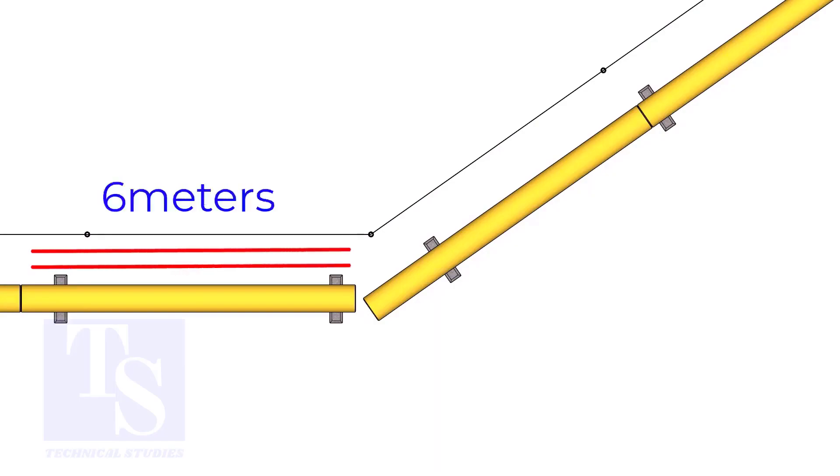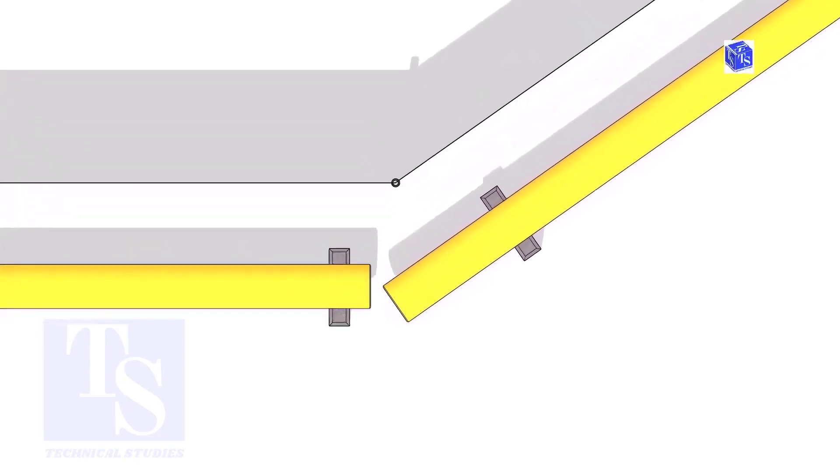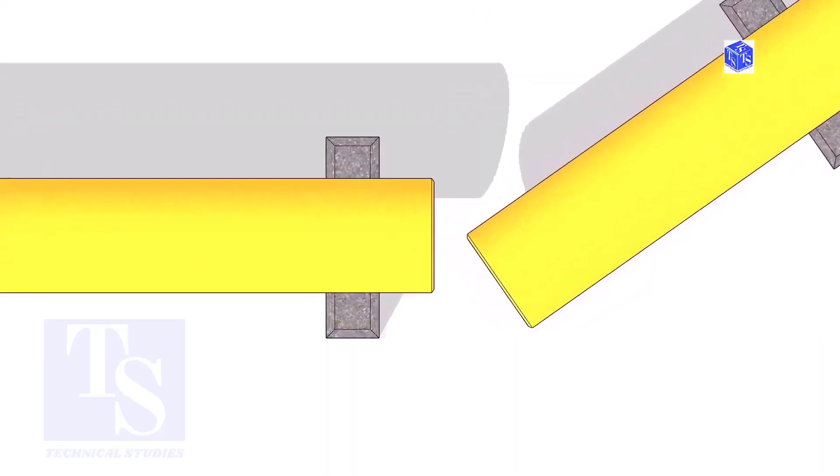The pipe shall be parallel to the fencing, not necessarily the entire length, but at least 6 meters on both sides. It's not necessary that the center lines of both pipes are in a line.